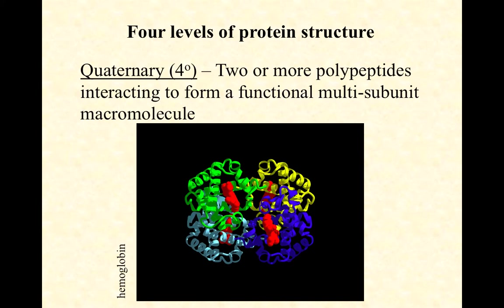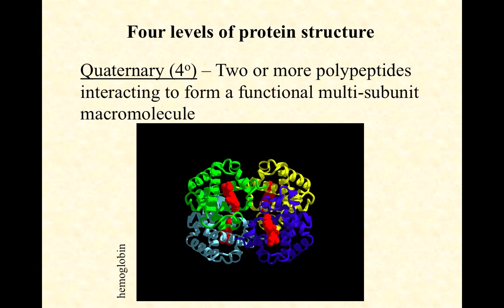Quaternary structure is when two or more folded polypeptides interact to form a functional multi-subunit macromolecule. Hemoglobin is a classic example, with multiple subunits — some identical, some different. Individually, none of those subunits can carry oxygen to cells or CO2 away from the lungs. Only when all the subunits come together can it function as designed — that is quaternary level structure.